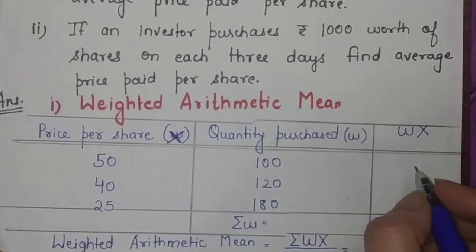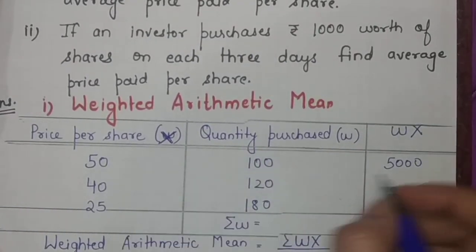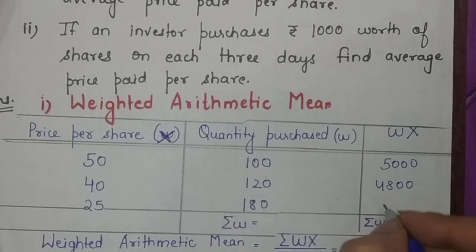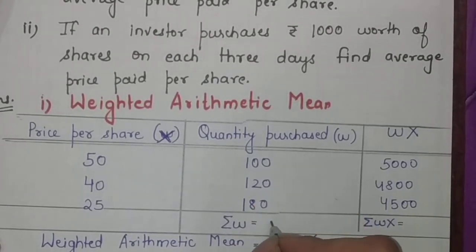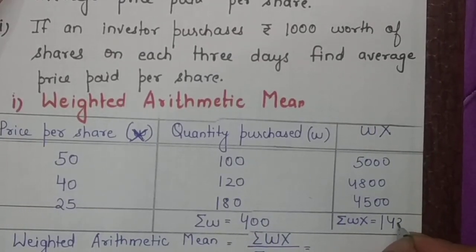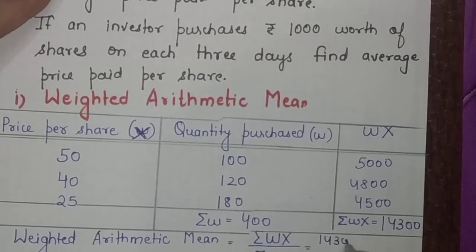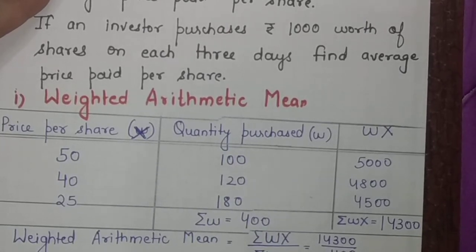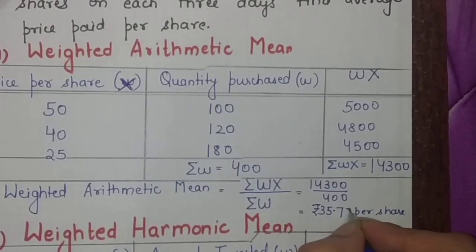You will find out the multiplication of W and X. It will become 5000, then 40 into 120 is 4800, and then 25 into 180 is 4500. The total of the W column is 100 plus 120 plus 180, which is 400, and the total of WX column is 14,300. So the weighted arithmetic mean is 14,300 divided by 400, and you will arrive at 35.75 rupees per share.